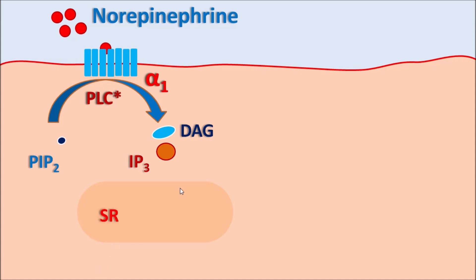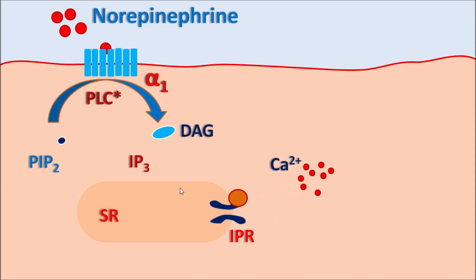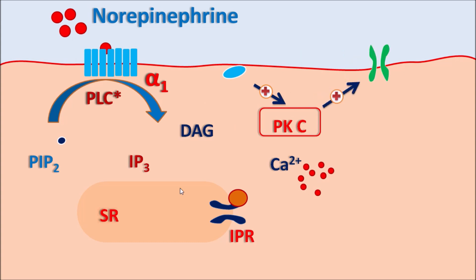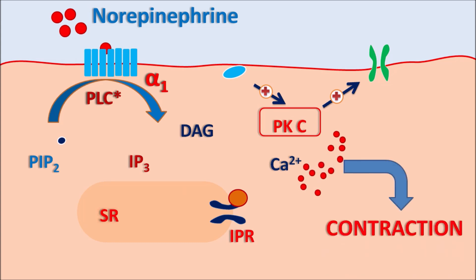IP3 increases intracellular calcium levels by acting on the sarcoplasmic reticulum, which expresses IP3 receptors. IP3 binds to these receptors, releasing calcium from the sarcoplasmic reticulum into the cytoplasm. Similarly, diacylglycerol interacts with the cell membrane and stimulates protein kinase C, which further activates inward calcium channels, causing calcium entry into the cell and further increasing intracellular calcium levels. When alpha-1 receptors are activated in this way, increased intracellular calcium produces contraction — vasoconstriction in vascular smooth muscle, and contraction of the bladder neck, prostate capsule, and urethra, reducing urinary flow.